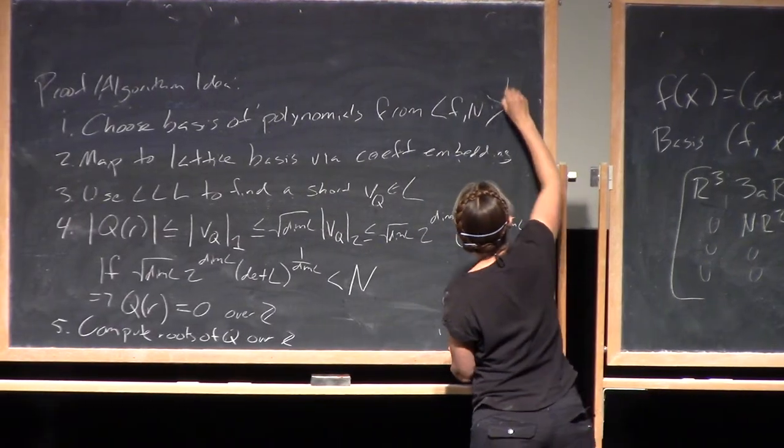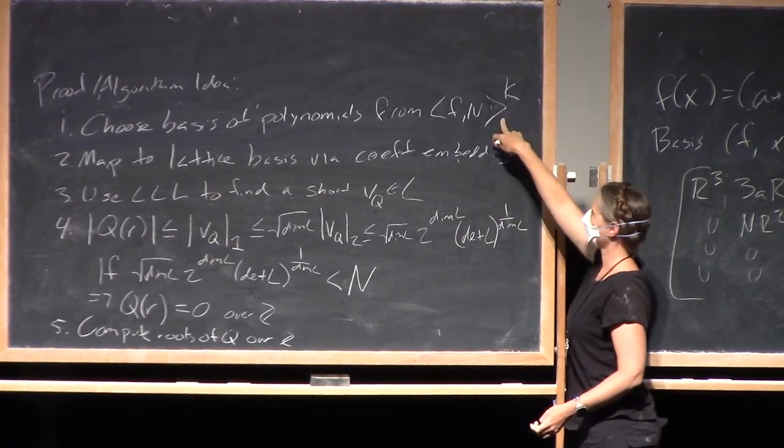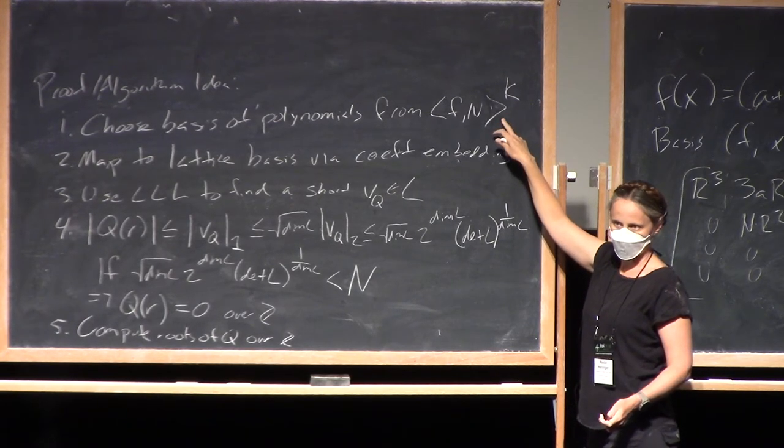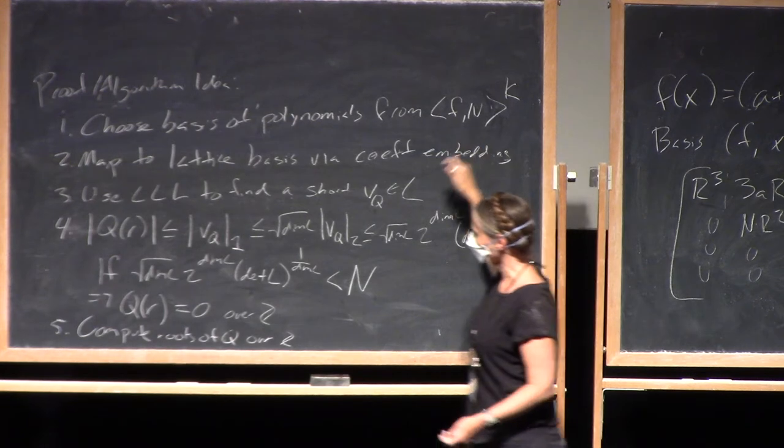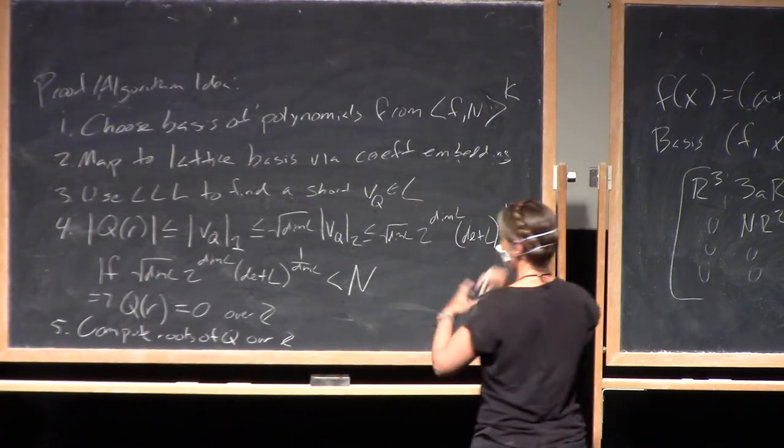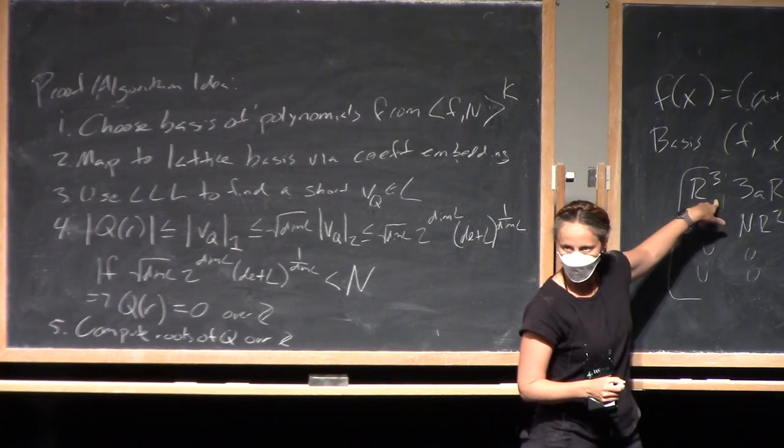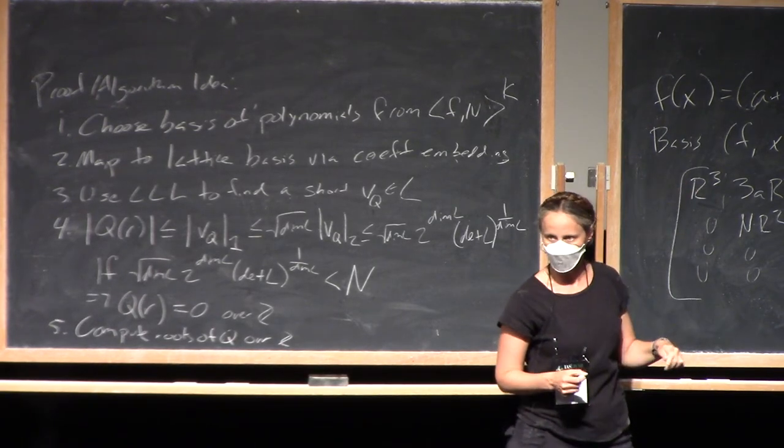So first is you need to have your polynomials vanish mod to a higher multiplicity mod n. So you take powers of this ideal. And then I just took degree three polynomials here, but you're going to want to take much higher degrees.